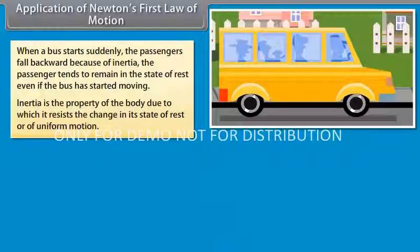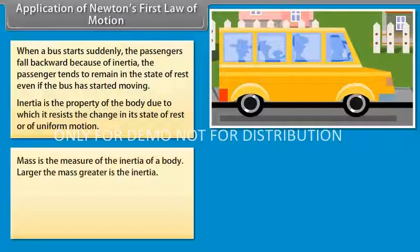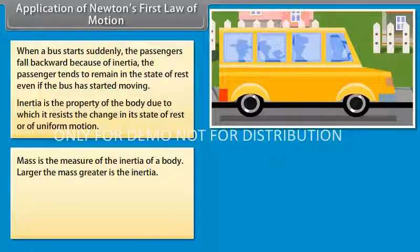Inertia is the property of the body due to which it resists the change in its state of rest or of uniform motion. Mass is the measure of the inertia of a body. Larger the mass, greater is the inertia.